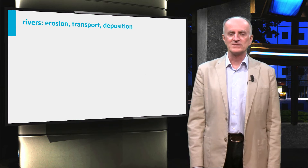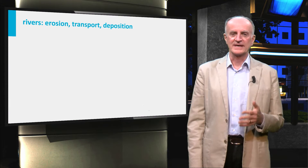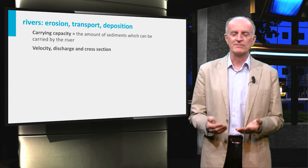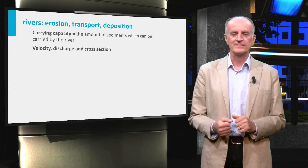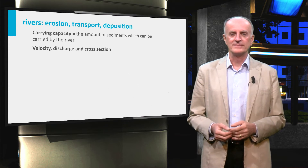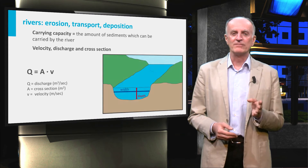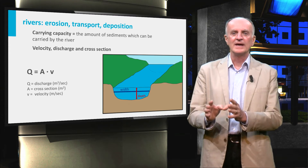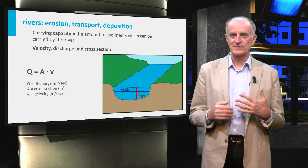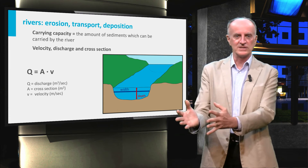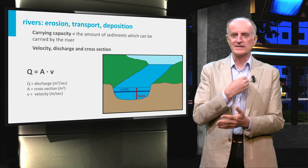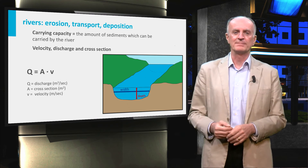It is useful at this stage to introduce a few theoretical concepts. The carrying capacity is a measure of the amount of sediment transported by the river and of the grain size it can carry. Carrying capacity is primarily dependent on the velocity of the water flow. The equation shows how the flow velocity depends on the discharge and on the section of the channel it is flowing through. If the channel section cannot change significantly, a sudden increase of water discharge will result in a strong increase in velocity and therefore of carrying capacity.